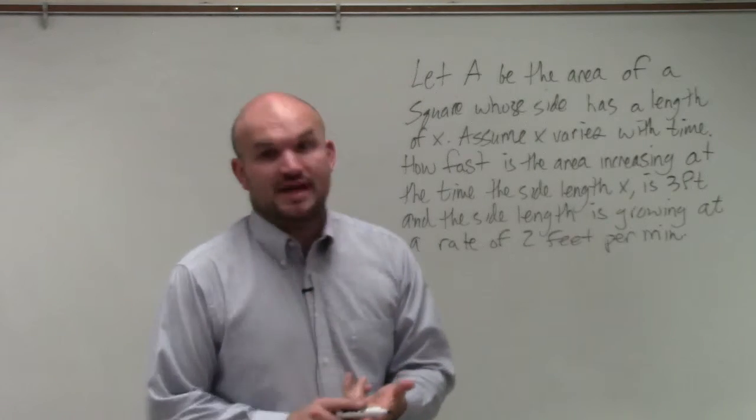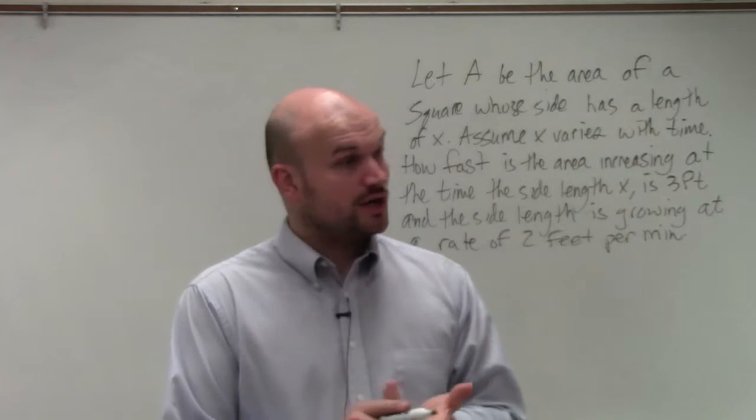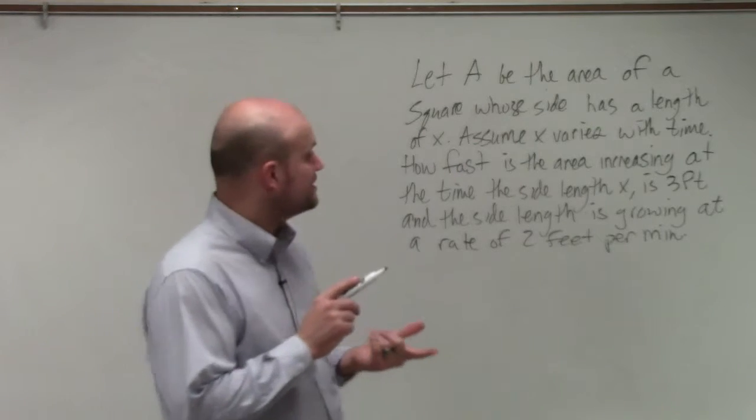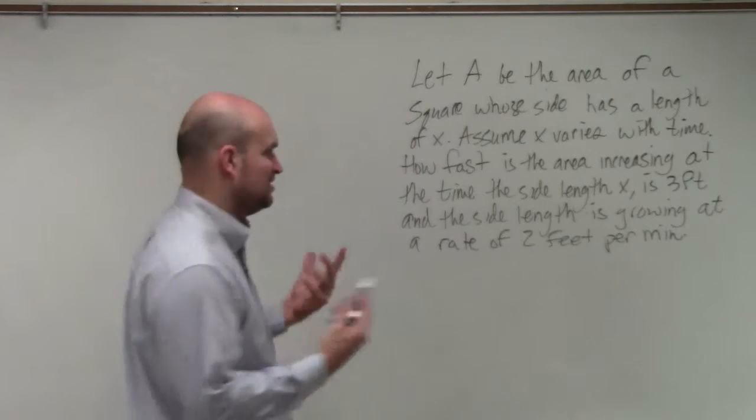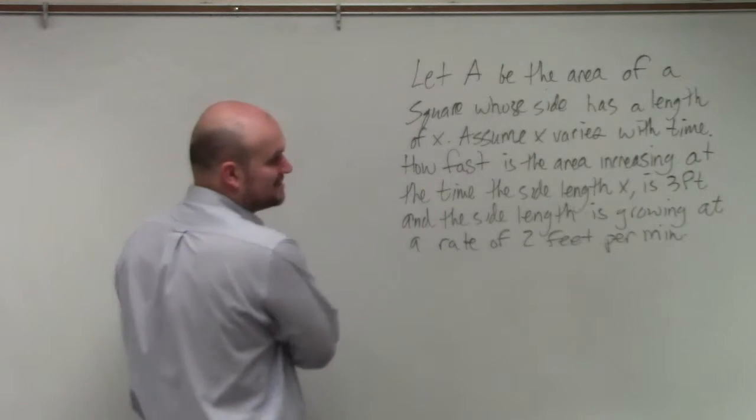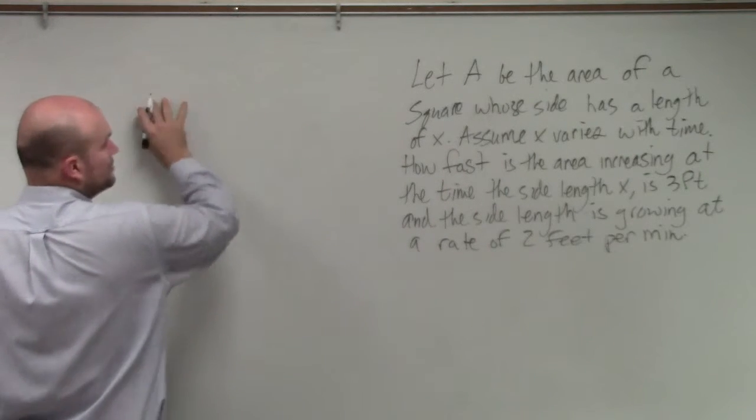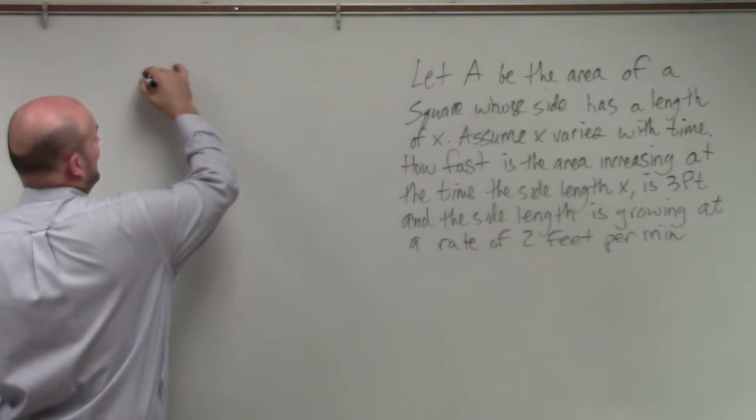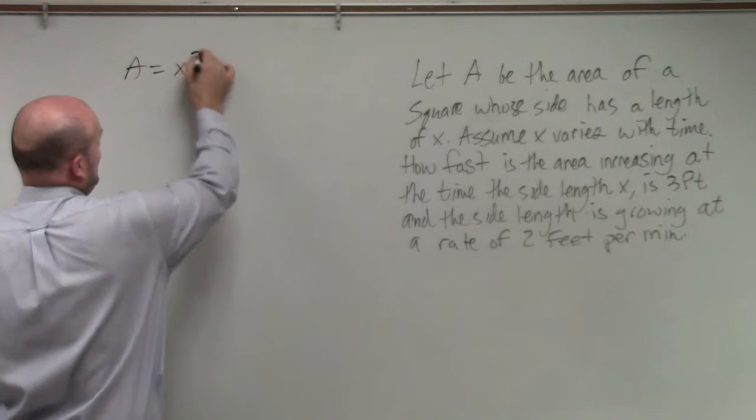One thing is I want to see what is changing and what are our rates, and also what is going to be our constant, or at least where we start at. So they're talking about the side length where X is equal to 3. So first of all, let's just write an equation. To represent the area, we have A equals X squared.